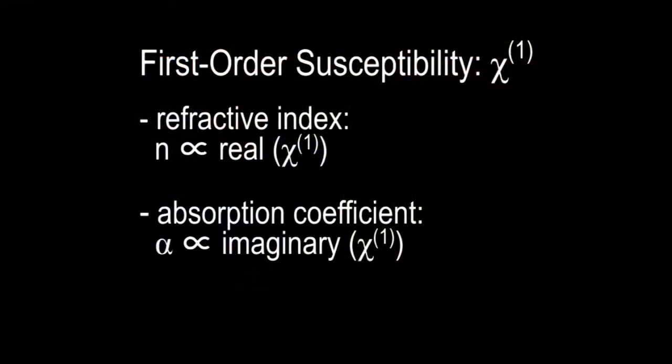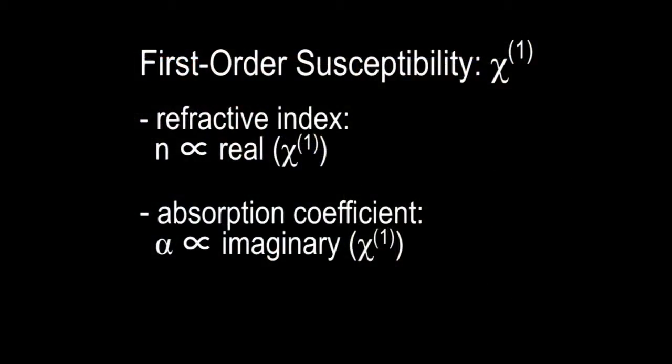The linear optical properties of materials are characterized by their first-order susceptibility or chi-1. These are responsible for optical properties like the refractive index and the absorption coefficient. We use pretty typical techniques to characterize them like absorption spectroscopy, ellipsometry, prism coupling, and things like that.